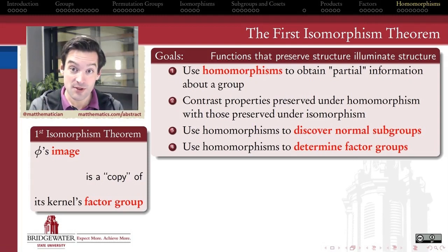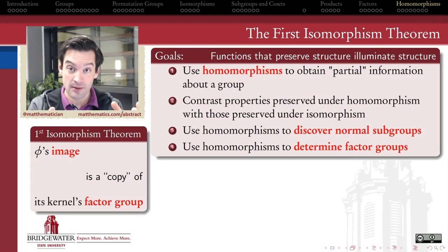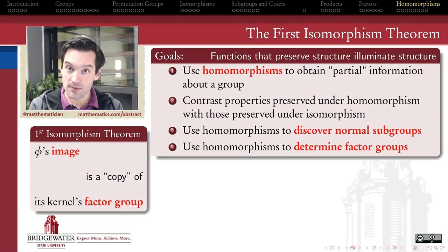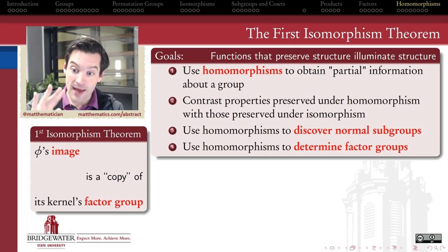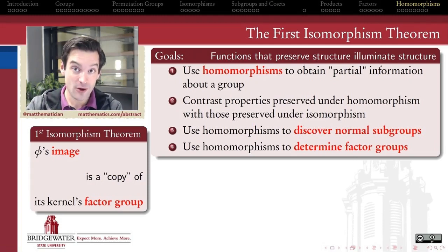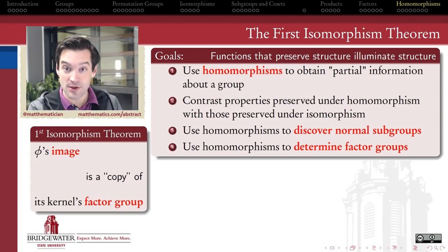The first isomorphism theorem establishes that not only is the kernel of phi a normal subgroup of G, but the image of phi as a subgroup of H, the target group, is isomorphic to the factor group of G by the kernel of phi. If we can forget about the lack of one-to-oneness that comes from a non-trivial kernel, what we're really doing is focusing on the factor group of G by that kernel. Our homomorphism then becomes an isomorphism between that factor group and the image of phi inside H.